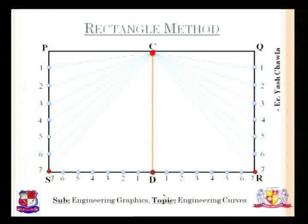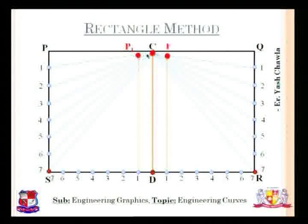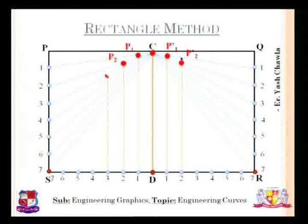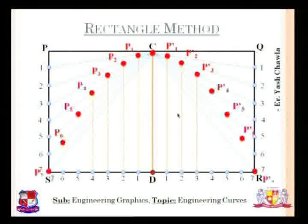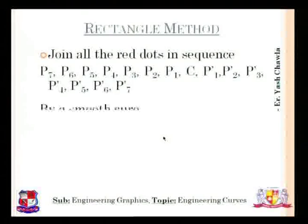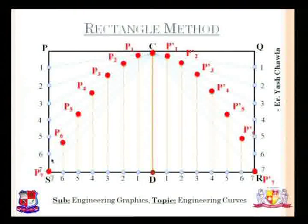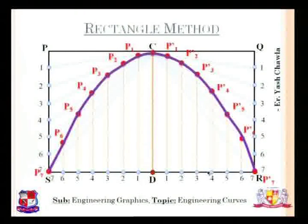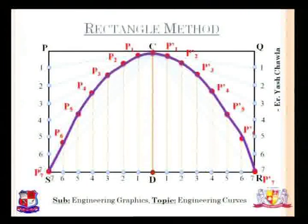From point 1 we draw a line up to the point where it intersects with the line passing through C1, and we get point P1. Similarly we get P2, P3, and P1 on both sides. Once we have all the points, the only thing left is drawing a smooth curve through them to get the required parabola. We will end the session here as we are running short on time.